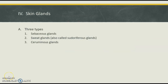There are a couple different types of specific glands in the integumentary system. The first one is sebaceous glands, the second one would be sweat glands, which are also known as sudoriferous glands, and then the third being ceruminous glands.